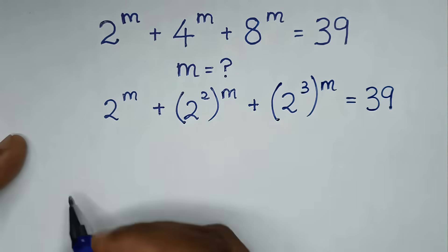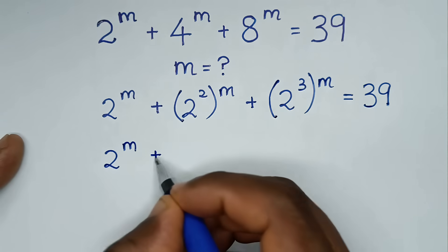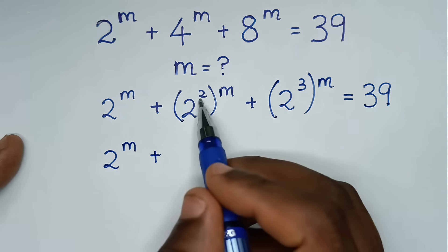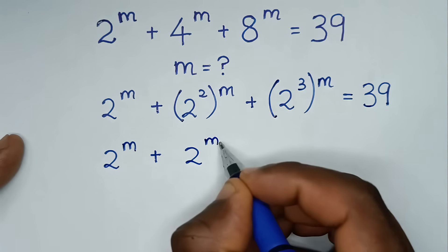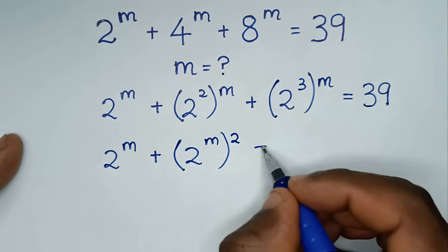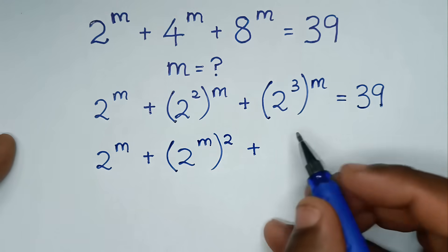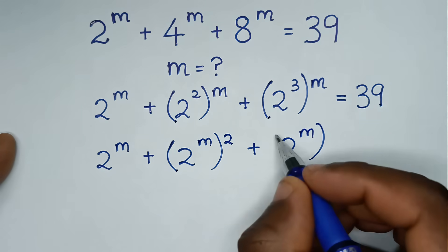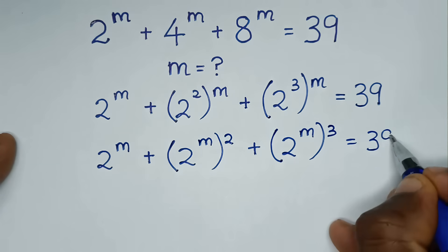Then, it will be 2 power of m plus — here we take the power of m inside the bracket, with 2 outside the bracket — so it will be 2 power of m bracket power of 2 outside the bracket, plus power of m inside, power of 3 outside. So it will be 2 power of m bracket power of 3 outside, is equal to 39.